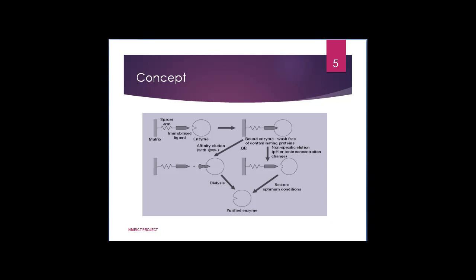For example, in the case of an enzyme, the ligand may be a substrate, a competitive reversible inhibitor, or an allosteric modifier. The conditions chosen would normally be those that are optimal for enzyme-ligand binding.